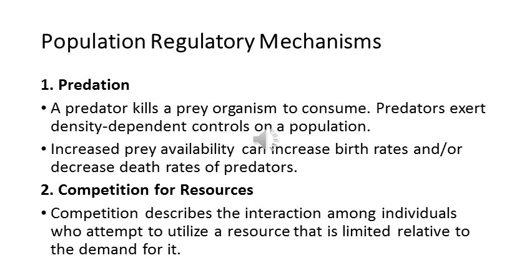The first regulatory mechanism is predation. Predation is a density-dependent control of the population where a predator consumes prey as food. If the population of prey increases, it also increases the birth rate of the predators and improves their health conditions. An increase in prey population also increases the predation rate and the predator population, so the prey population can be controlled through this mechanism.